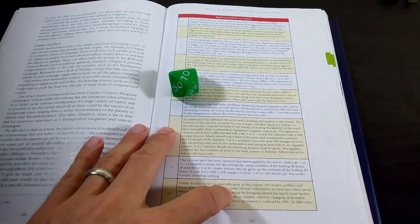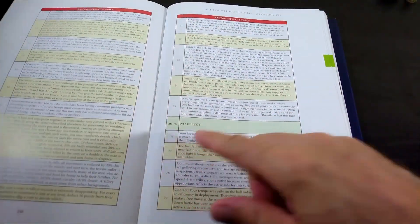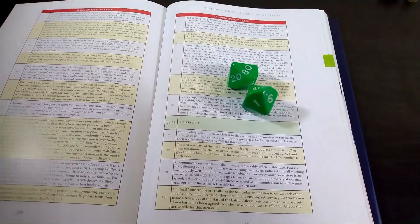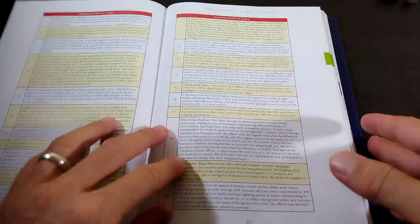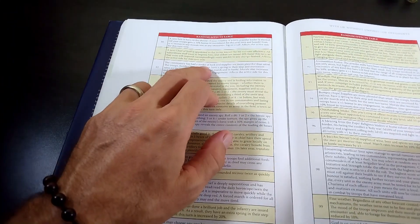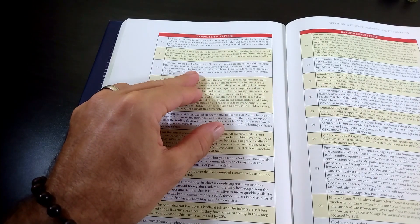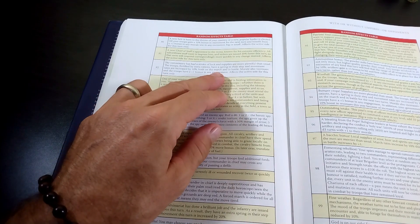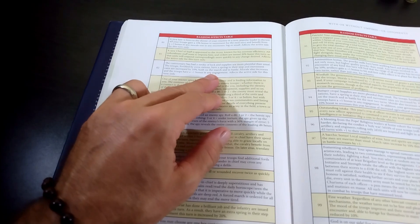So rolling first for the Bromans, we get a 71, which on this table is no effect. So nothing for the Bromans, and what about for our skeletons? On an 82, the commissary has a stroke of luck. Supplies are more plentiful. The troops have extra spring in their step, and movement rates are increased by 10% on the march, and in battle, morale increases, and the troops have a plus one bonus in any engagement.